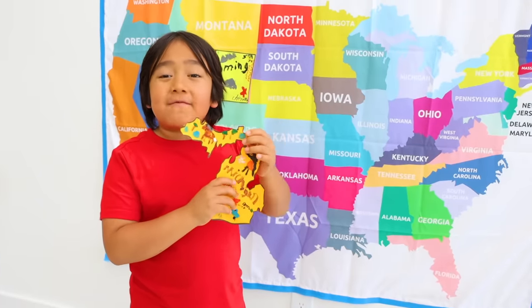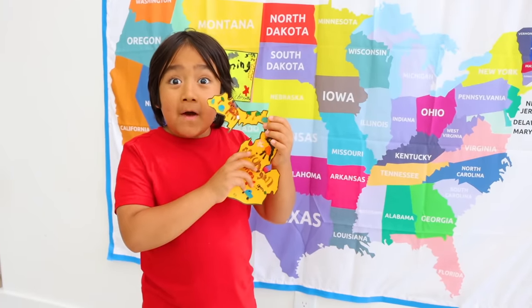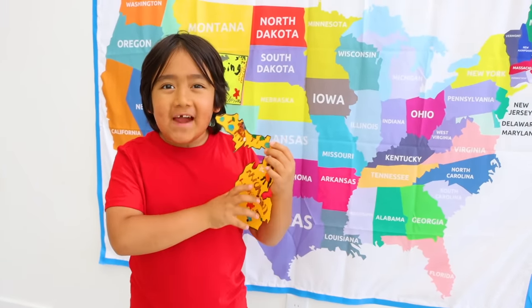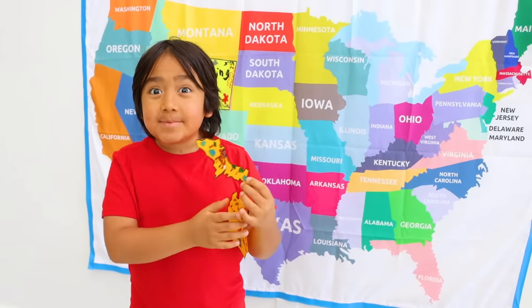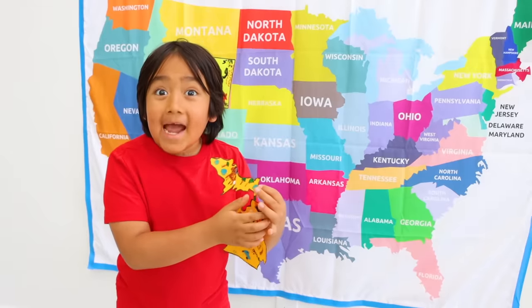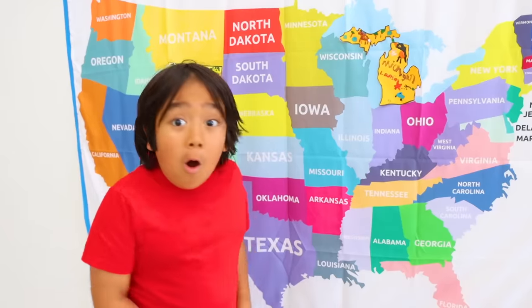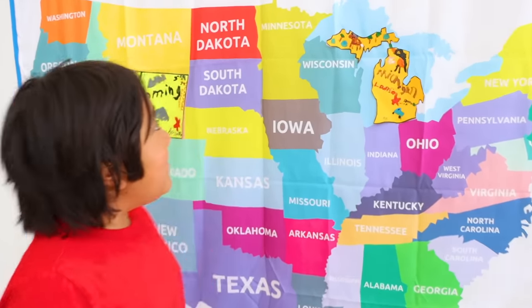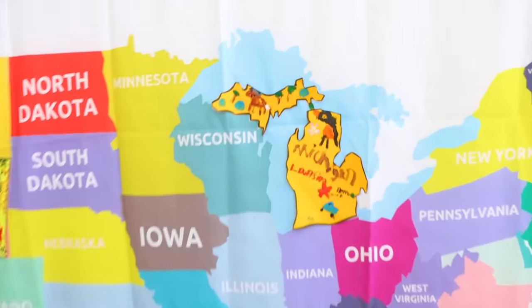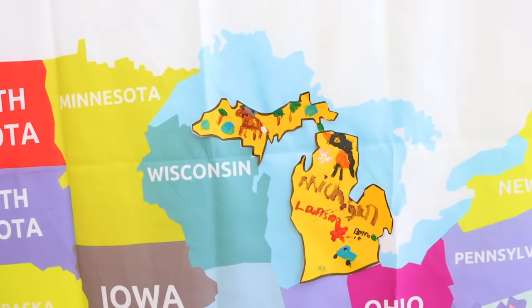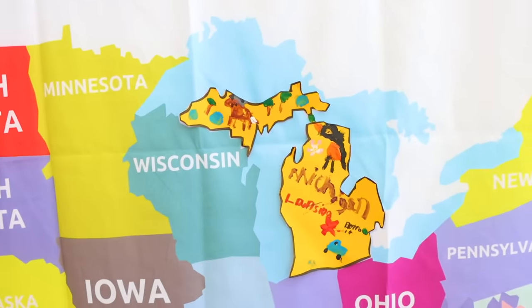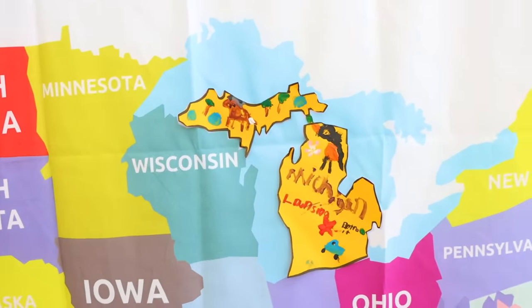Thanks, Peck, for all those fun Michigan facts. Now let's put it on the map. Peck was right - Michigan touches four of the five Great Lakes.